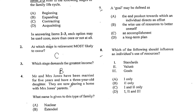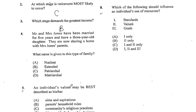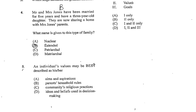Number 4. Mr. and Mrs. Jones have been married for 5 years and have a 3-year-old daughter. They are now sharing a home with Mrs. Jones' parents. What name is given to this type of family? Mr. and Mrs. Jones living with their 3-year-old daughter would be a nuclear family, but based on the fact that they are sharing the home with Mrs. Jones' parents — the grandparents — this is an extended family. Once a nuclear family is extended to living with other relatives such as grandparents, uncles, aunties, or cousins, that gives rise to the extended family.